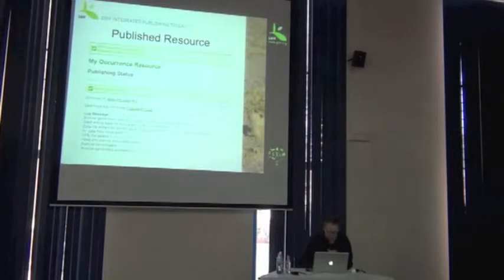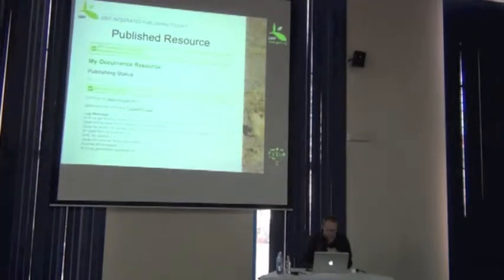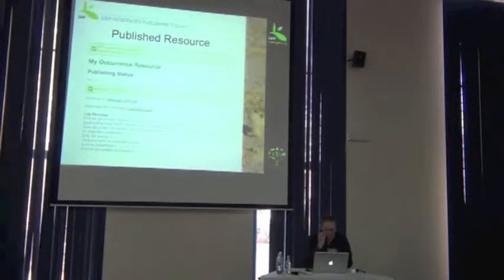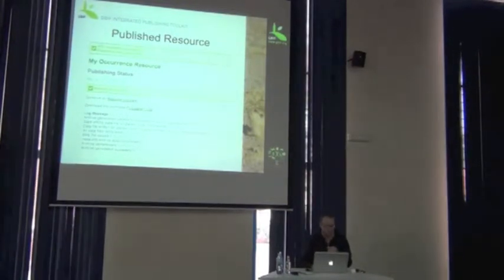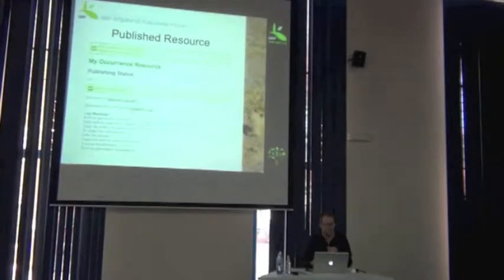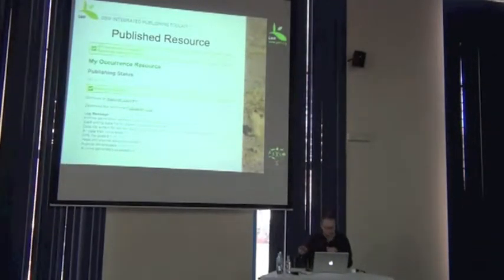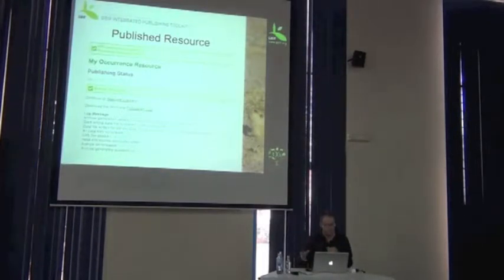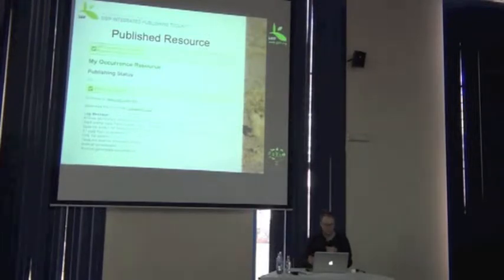The first archive generation started with the resource. It started writing the data file. The EML file, which is the metadata file, was written. The metadata XML file — that's the XML descriptive file which has the mappings between your column names and Darwin Core terms. Everything was compressed, and it says thumbs up: the DwC archive was successfully delivered.